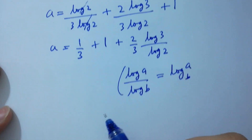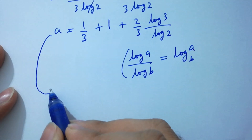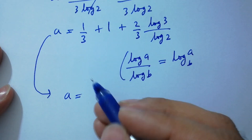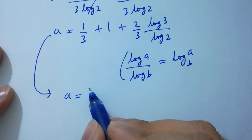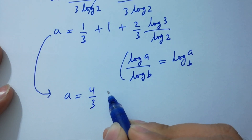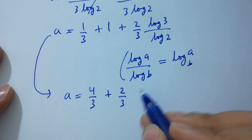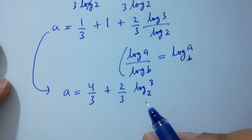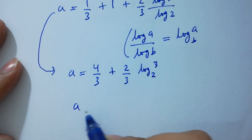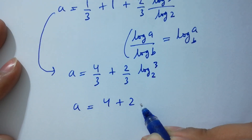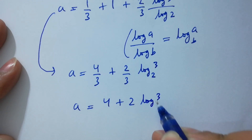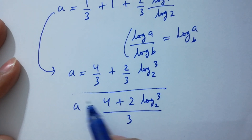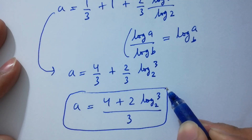Using log base b notation, a equals 1 over 3 plus 1, giving us 4 over 3 plus 2 over 3 log 3 to the base 2. Therefore a equals 4 plus 2 log 3 to the base 2, all over 3, which is the value of a.